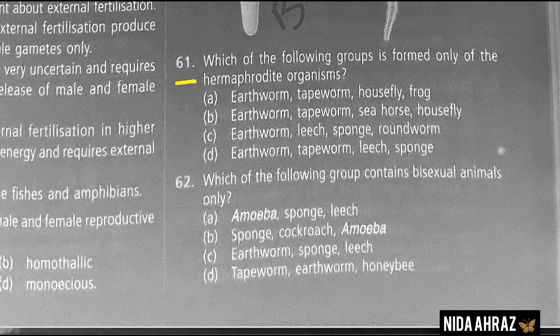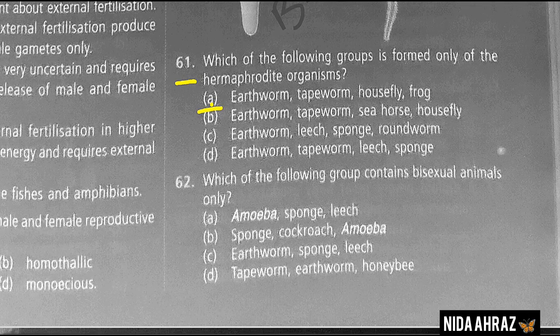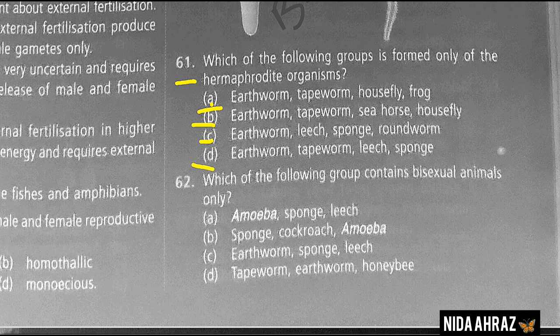Which of the following groups is formed only of hermaphrodite organisms? The options include various combinations. The group containing earthworm, tapeworm, leech, and sponge — option D — is the correct choice.